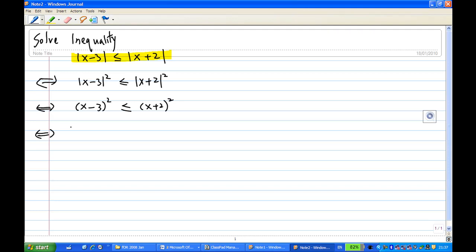And now I will use square both sides which means that x squared minus 6x plus 9 on the left hand side is less than equal to x squared plus 4x plus 4 on the right hand side. Note that you have to be careful because x minus 3 squared is not equal to x squared minus 3 squared alright. You have to be careful about that.